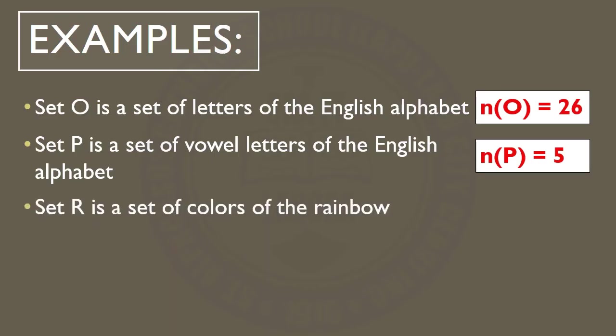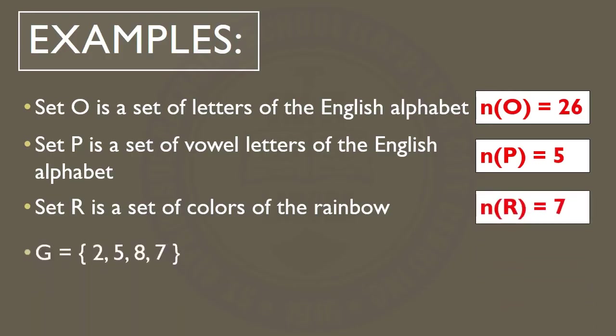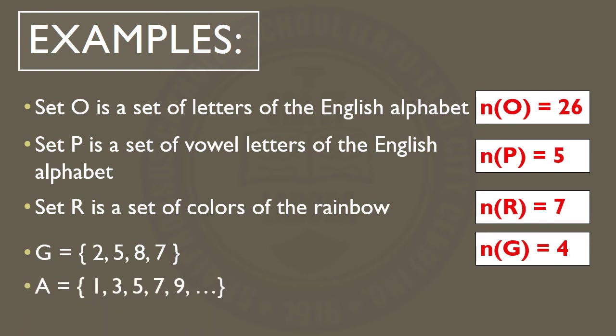Set R is a set of colors of the rainbow — there are 7 colors of the rainbow, so the cardinality of set R is 7. Set G has elements 2, 5, 8, and 7 — there are 4 elements, so the cardinality of set G is 4. Next is set A, which has elements 1, 3, 5, 7, 9, and so on — these are the odd numbers. So the cardinality of set A is infinite; we cannot count all the odd numbers.